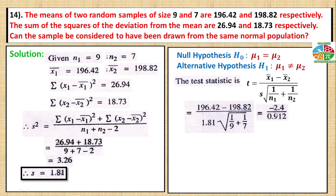Applying the formula, we get minus 2.4 divided by 0.912, which equals minus 2.63. Taking the positive value, the calculated value is 2.63.